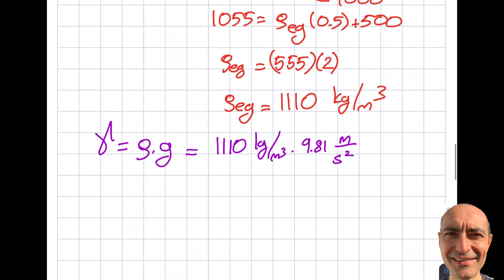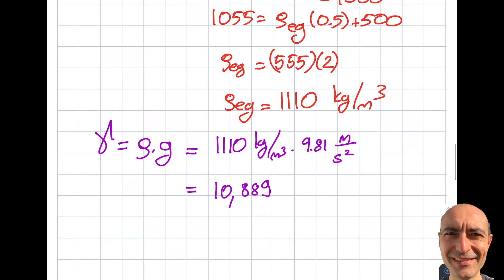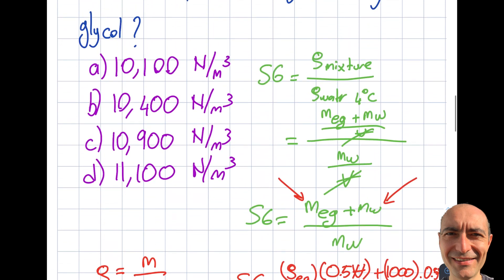Density is 1110 kilograms per meter cubed times the gravity will be 9.81 meters per second squared. From here you will get yourself 10,889. What is the units? Well, it's beyond the scope for an FE exam, but obviously you can see from here I'm going to get Newton per meter cubed. This is acceleration, right, and this is the mass. Ma is force which is Newton, Newton per meter cubed.